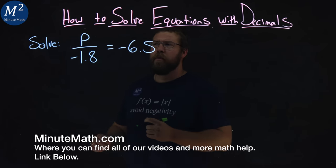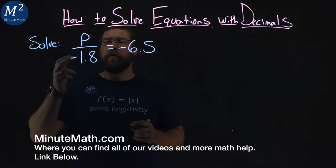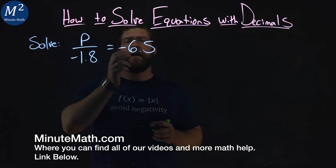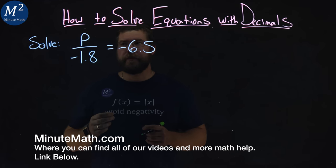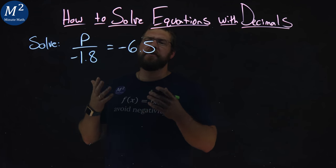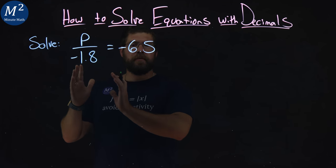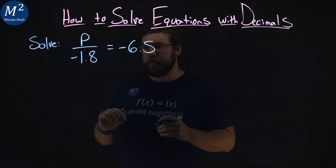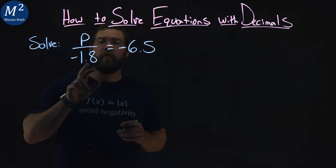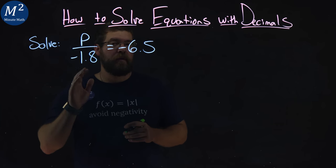We're given this problem right here. Solve p over negative 1.8 equals negative 6.5. Our multiplication property of equality states we can take a number and multiply to both sides of the equation. If we make that number negative 1.8, we'll eliminate that on the left-hand side.